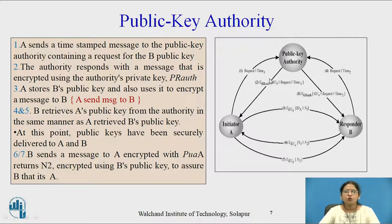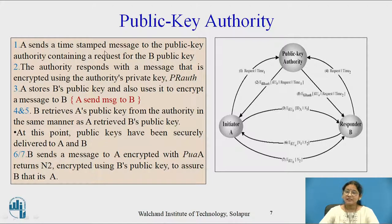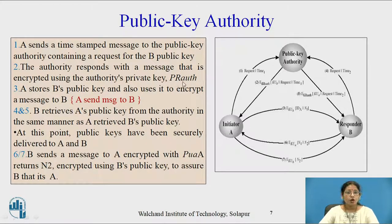Here is the flow of what happens in public key authority. A wants to start a communication with B. A sends a timestamped message to the public key authority containing a request for B's public key. The authority responds with a message encrypted using the authority's private key (PR_auth). A stores B's public key and uses it to encrypt a message to send to B, so communication starts from A's side.